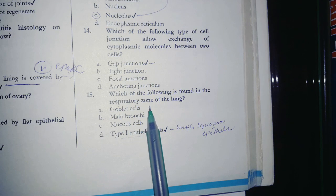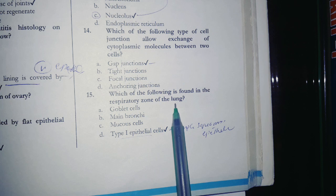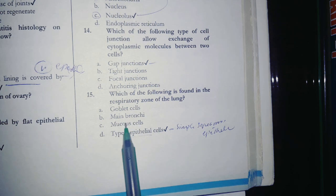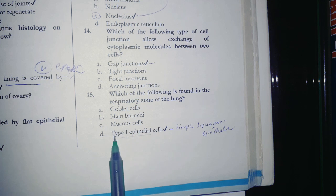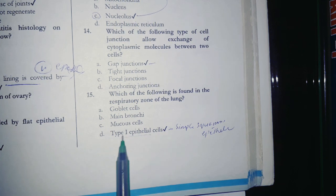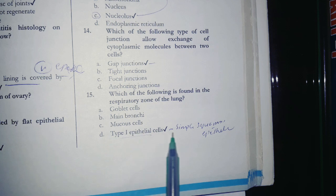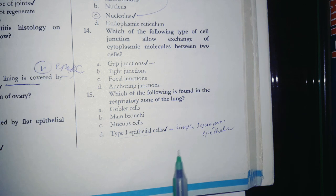Which of the following is found in respiratory zone of lungs? Goblet cell, main bronchi, mucous type 1 epithelium. This type 1 is also called type 1 pneumocytes or type 1 epithelial cells and we know that it is the simple squamous epithelium.